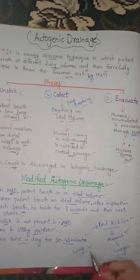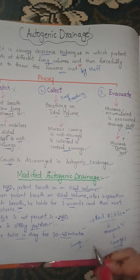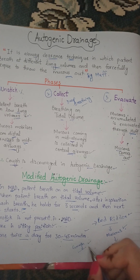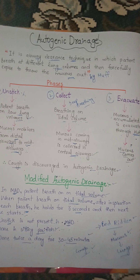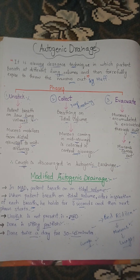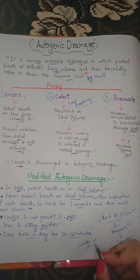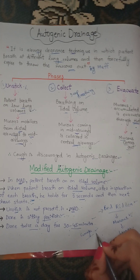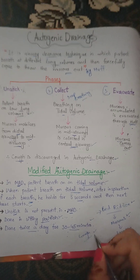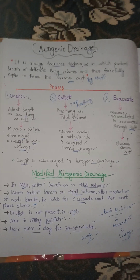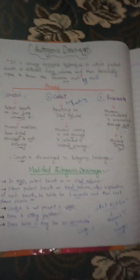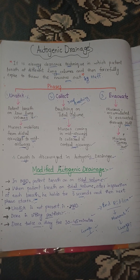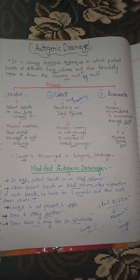In abdominal surgeries, cuff is discouraged because it increases abdominal pressure. Instead, a pillow is placed on the patient's abdomen and then the patient is allowed to cuff. That was all for today's lecture — if you liked the video, please subscribe to the channel and press the bell notification button.